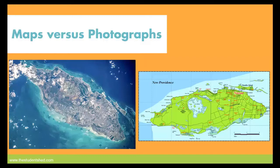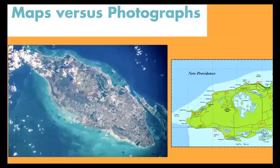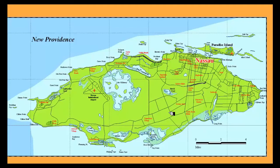Look at this map of New Providence over here to the left. It's an aerial photograph and we see almost everything that's going on — the houses, buildings, development, vegetation, harbors and so on. Whereas the map over here to the right is also a map of New Providence, but we're not seeing as much detail. And even though it's not as much detail, sometimes this is exactly what we need in order to achieve the goal.